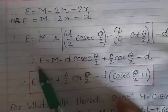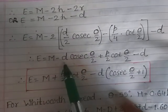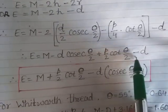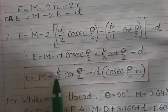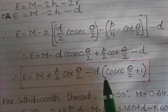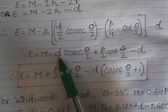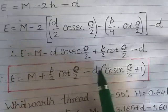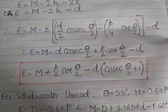Simplifying this equation: E = M + (p/2)cot(θ/2) − d[cosec(θ/2) + 1]. Taking d common gives the final expression: E = M + (p/2)cot(θ/2) − d[1 + cosec(θ/2)]. This is the final expression for effective diameter measurement by the three-wire method.